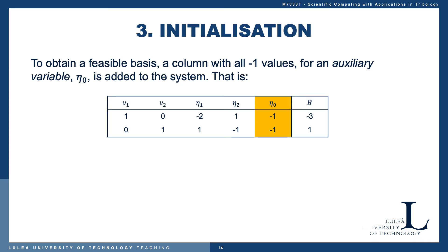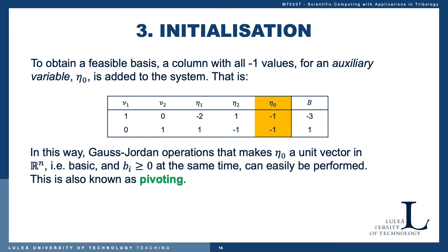The initialization looks like this: we add a column with all minus ones for an auxiliary variable, which we call eta_0. By doing this, we can perform ordinary Gauss-Jordan operations that make eta_0 a unit vector in R^n — by definition making it a basic variable. We also want B_i to be positive at the same time, which is achieved by the addition of this auxiliary variable through pivoting.